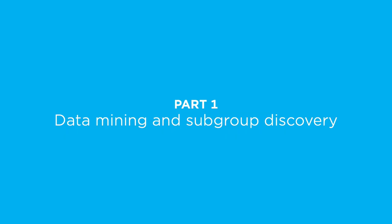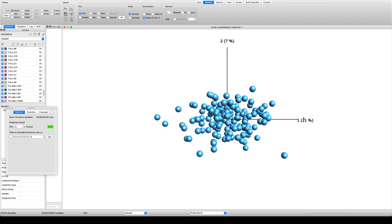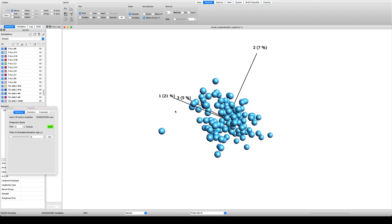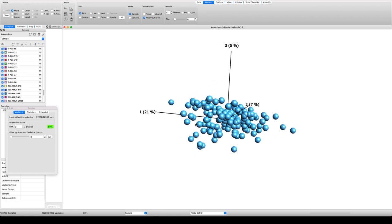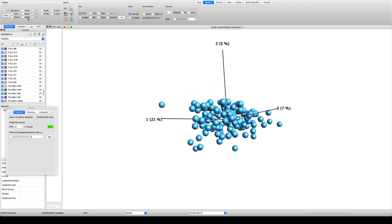In part one, we will investigate and explore a data set with the objective to identify new subgroups. We will start by using a sample PCA plot. Here, each sphere represents one sample, which in this case is a patient.